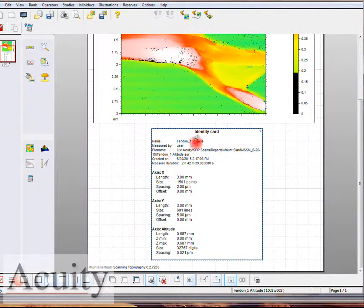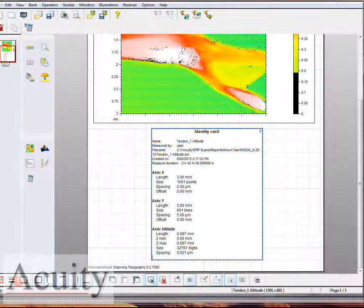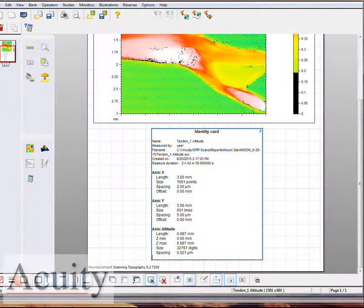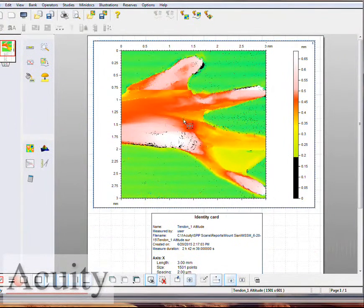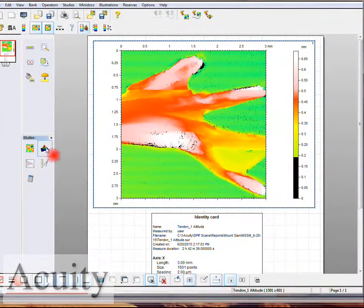Here's the little identity card. Once again, 3 millimeters by 3 millimeters. We took 1,501 points along the X axis and we dropped it down and we did 601 scans or profiles across that. So roughly we have a little over 900,000 points that we collected using this technology. Let's go ahead and take a look at this.